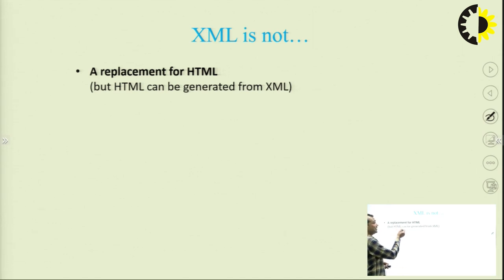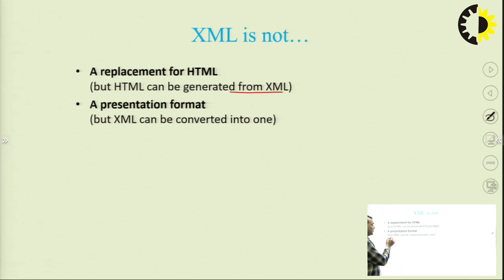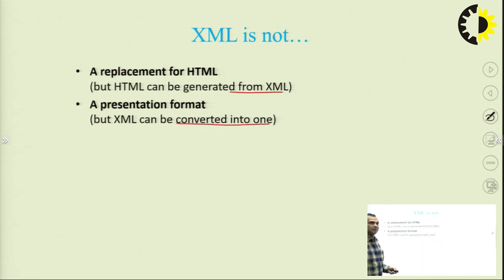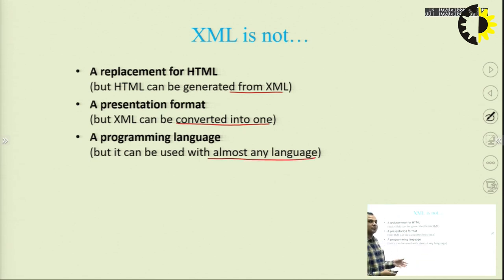HTML can be generated from XML. XML is not a programming language, but it can be used with any programming language when you need to describe data.